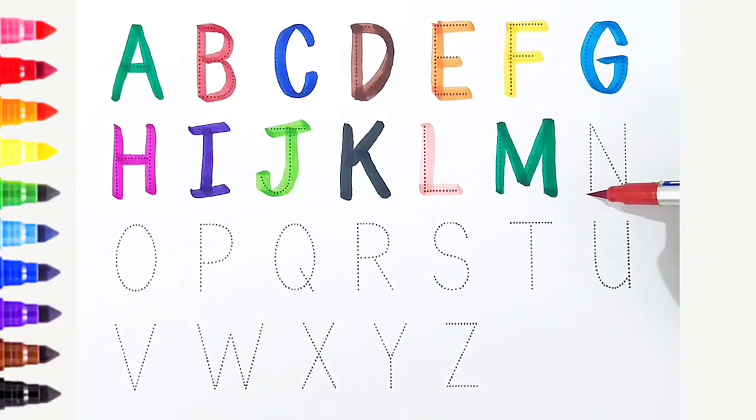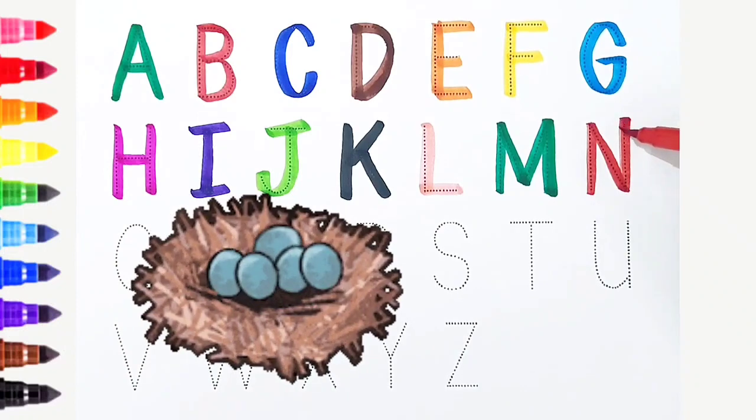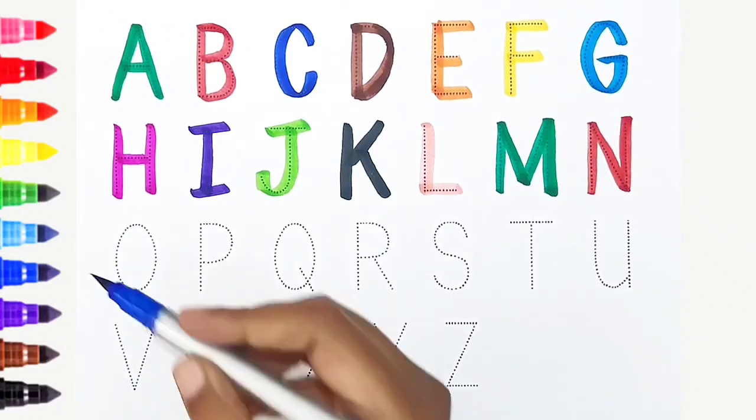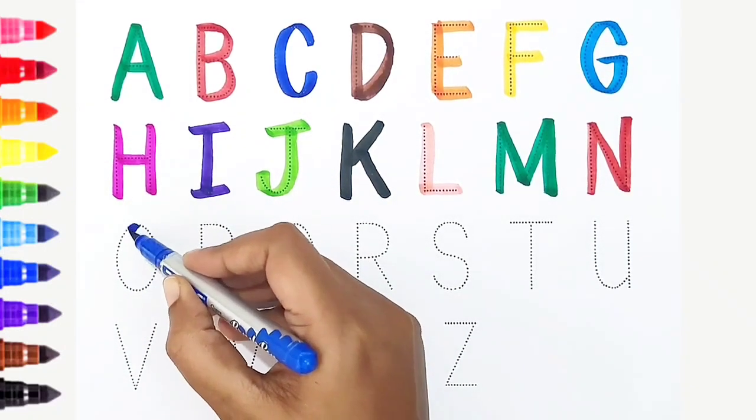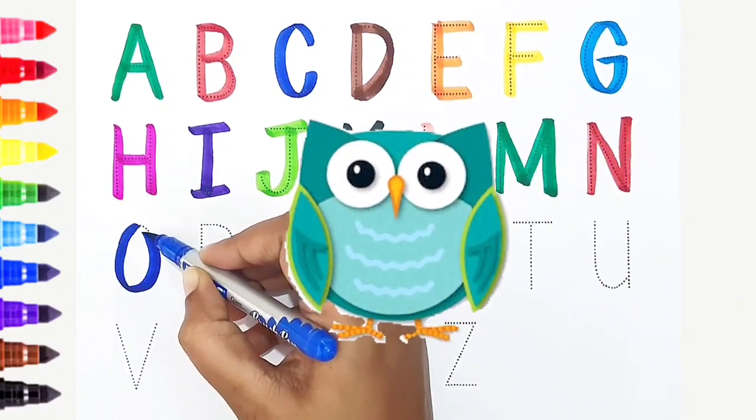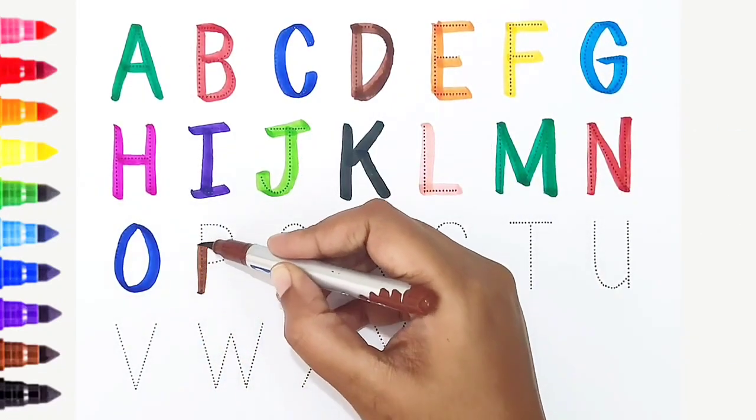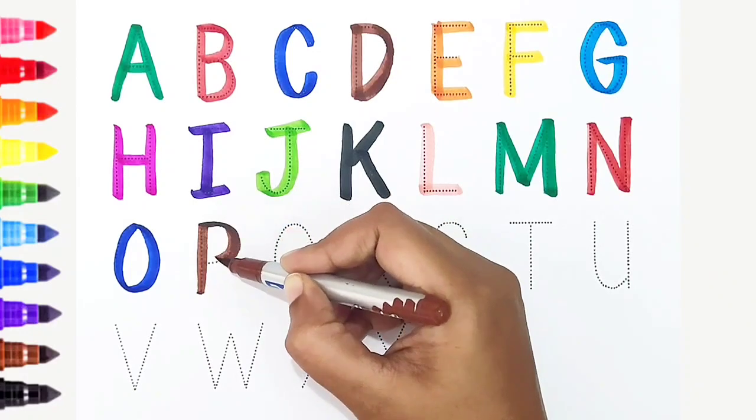N, red color. N is for nest. O, dark blue color. O is for owl. P, brown color. P is for penguin.